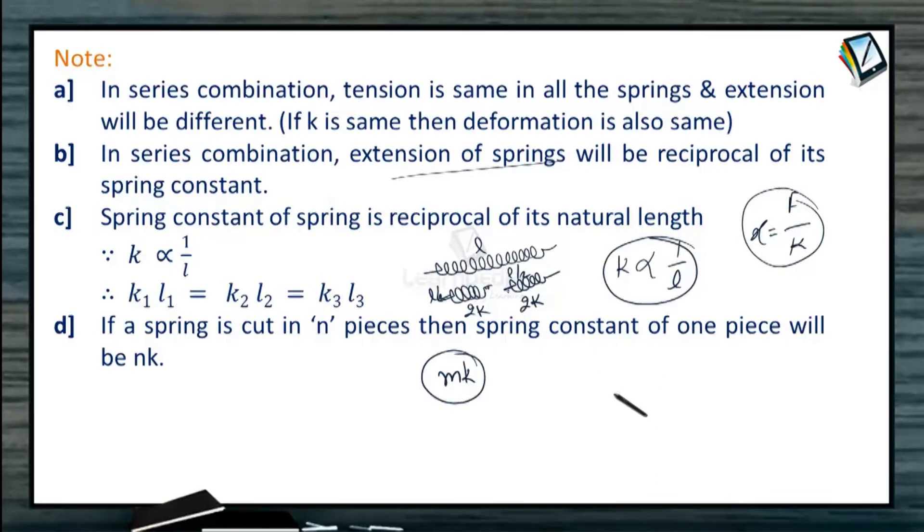So here is one trick which you can use for dissimilar length. Suppose we have one spring and we have cut this spring in ratio 1 is to 3. Then what should be their spring constant? Just see, they are cut in 1 is to 3. That means if we make 4 pieces out of this spring,